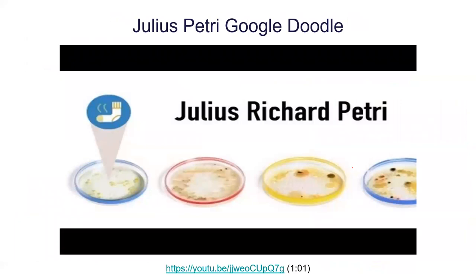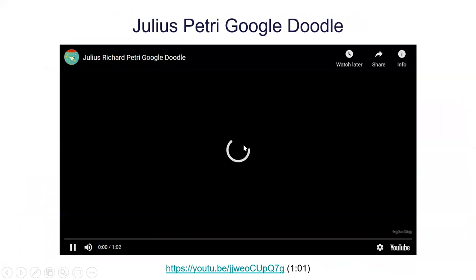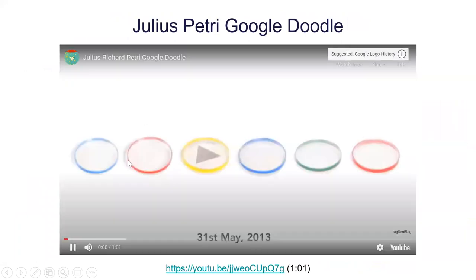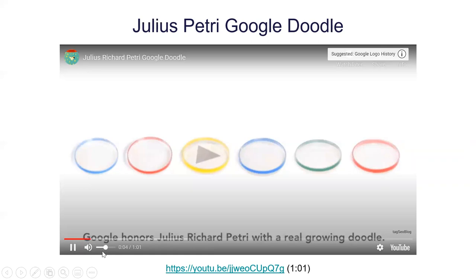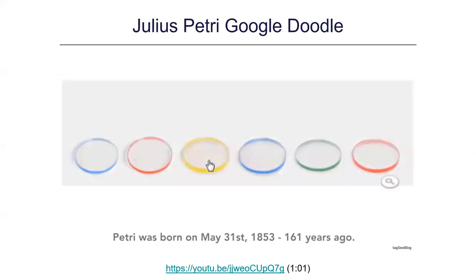You can see different species of bacteria on your plates. They're a very useful technique for culturing microbes. I found this video — Google was celebrating the birthday of Julius Petri, who is of course the inventor of the petri dish.